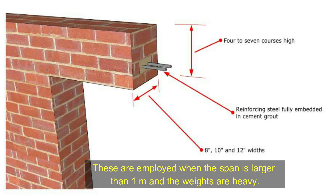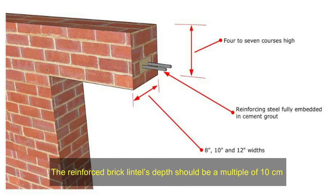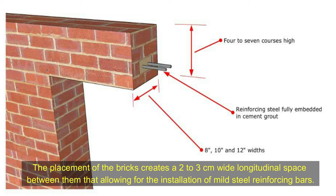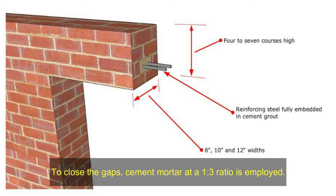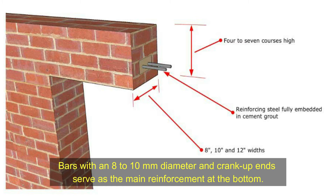Reinforced brick lintel beam: these are employed when the span is larger than one meter and the weights are heavy. The depth should be a multiple of 10 centimeters. The placement of bricks creates a 2 to 3 centimeter wide longitudinal space between them, allowing for the installation of mild steel reinforcing bars. Cement mortar at a 1:3 ratio is employed. Every third vertical joint has a 6 millimeter diameter vertical stirrup, and bars with an 8 to 10 millimeter diameter with cranked ends serve as the main reinforcement at the bottom.